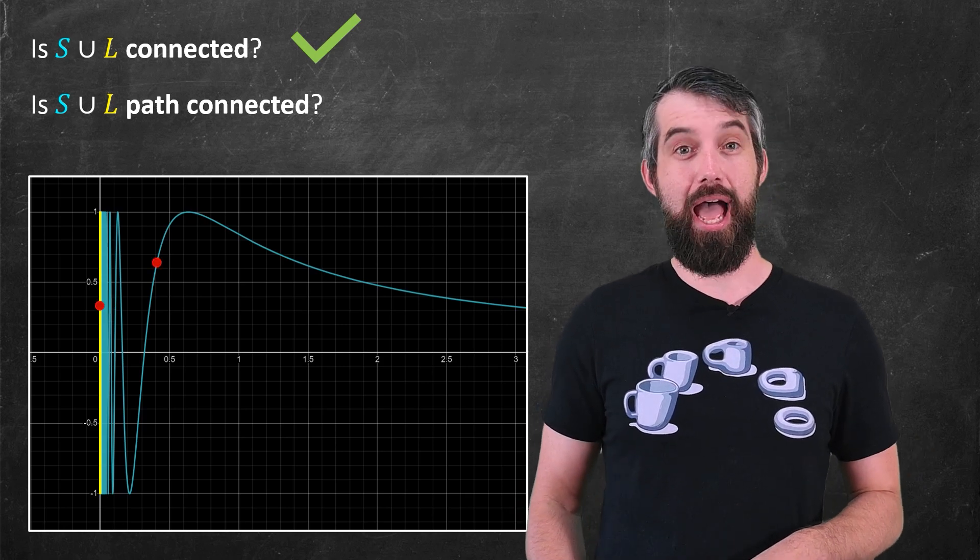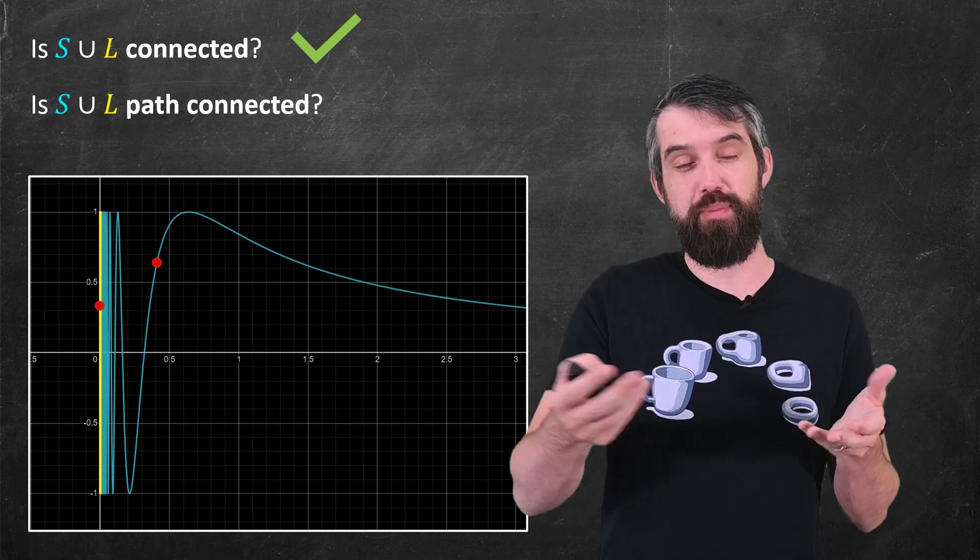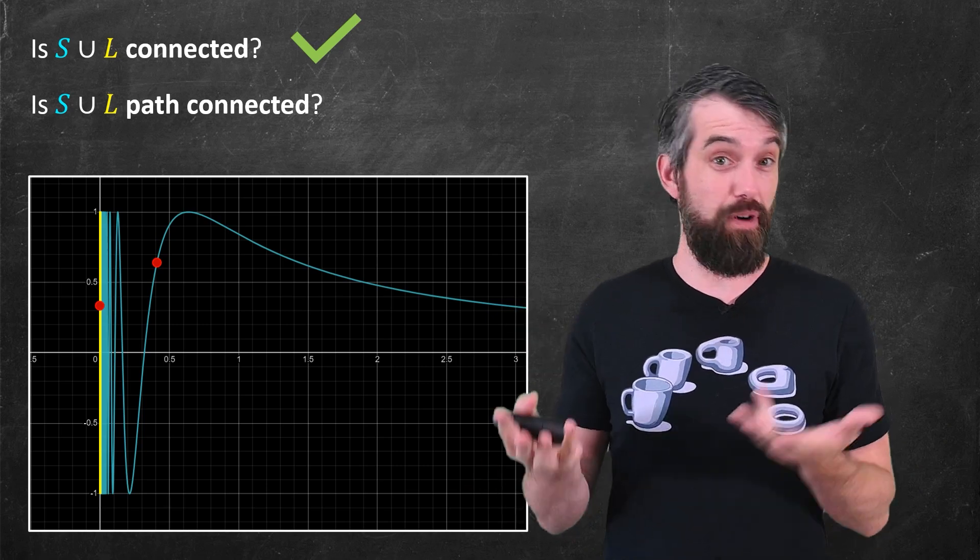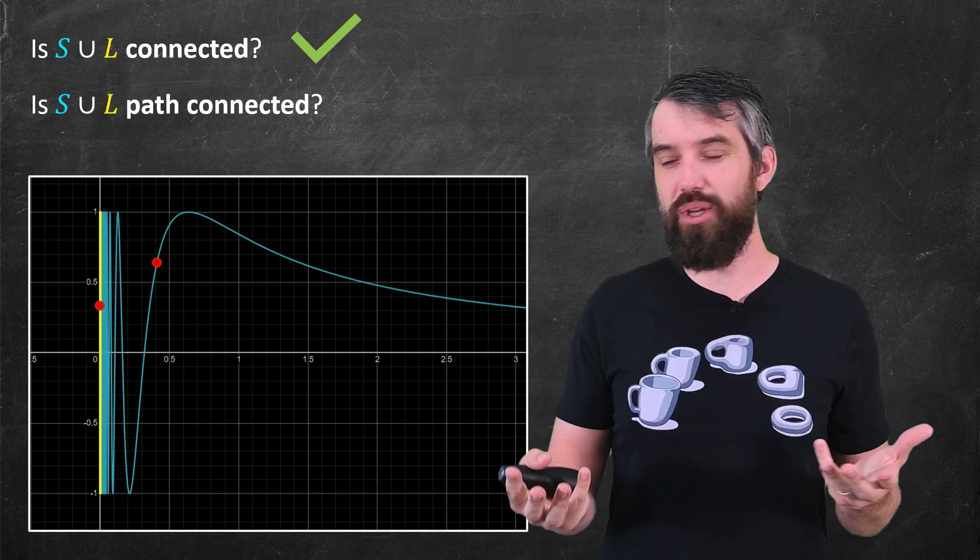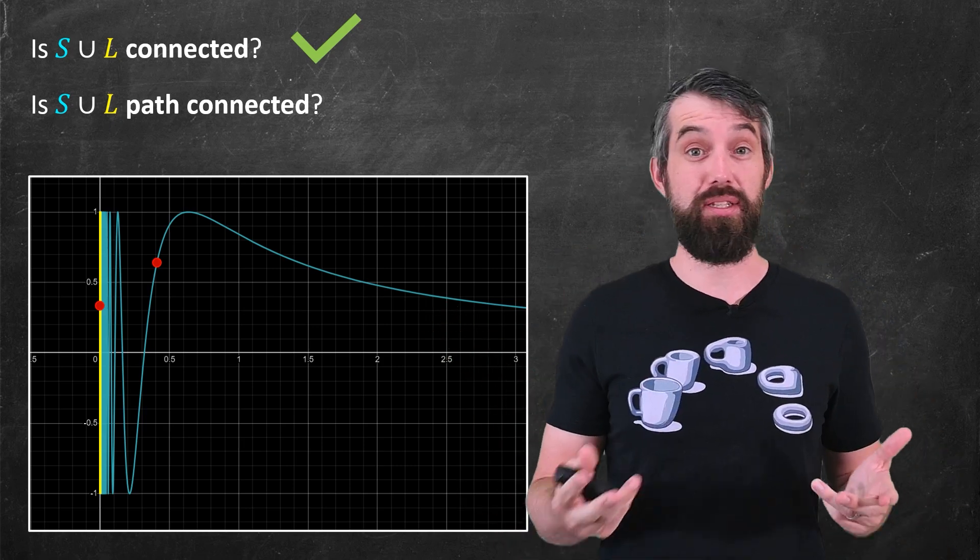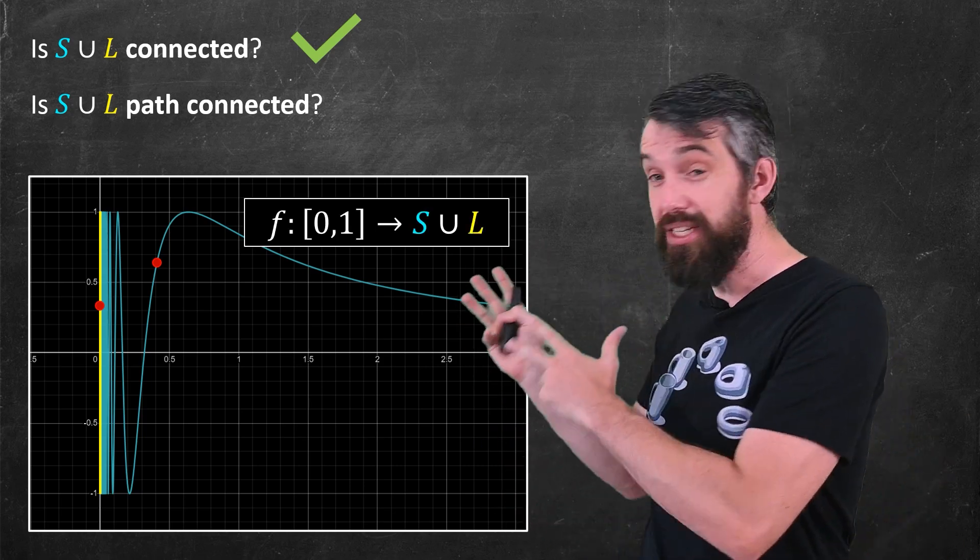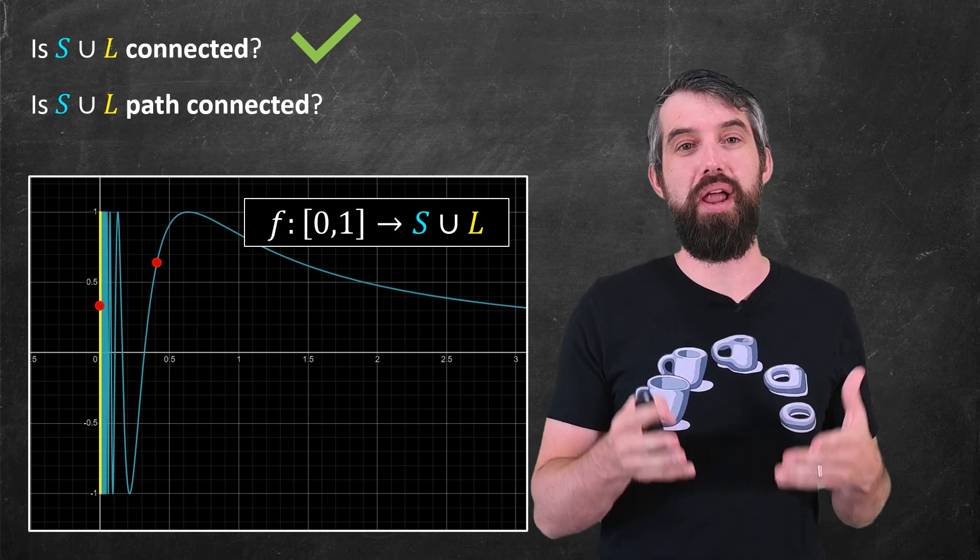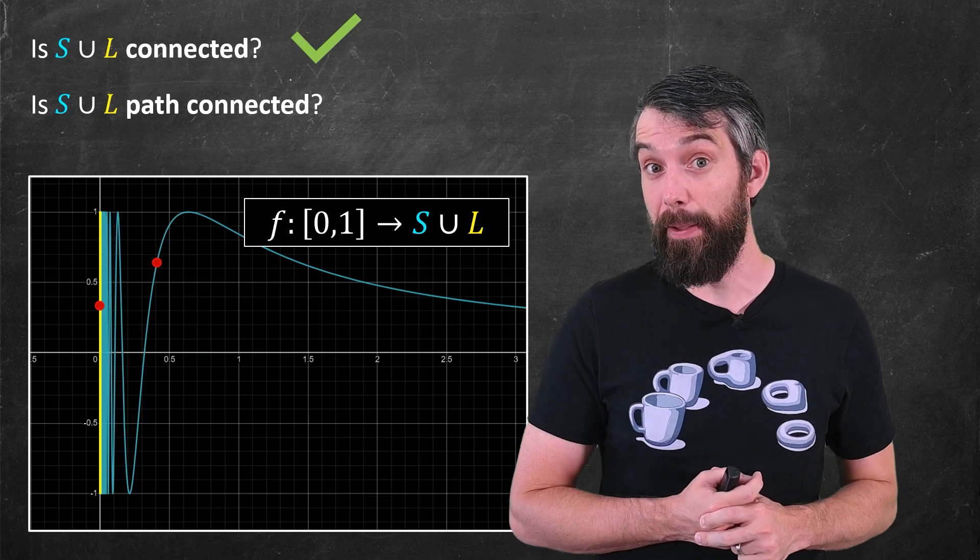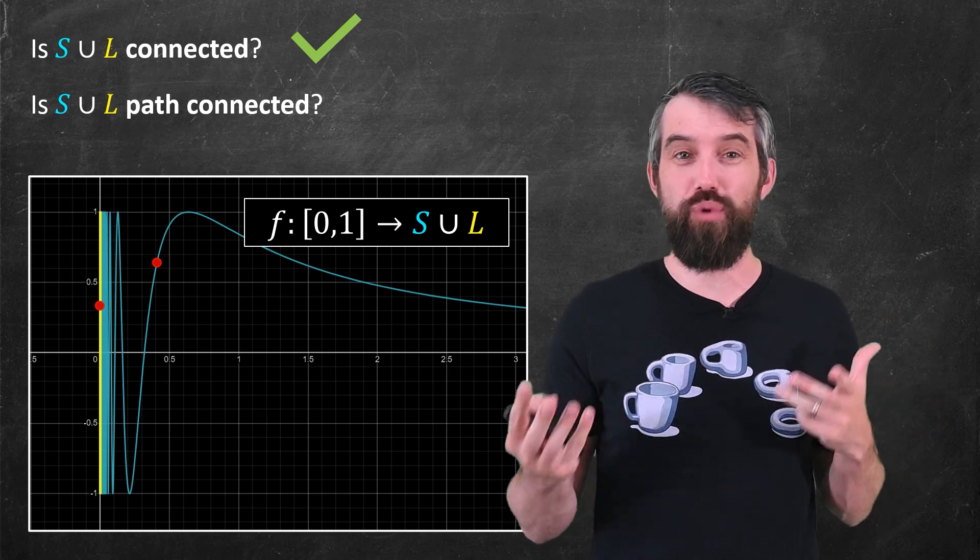For path connected, I am asking if I take two points that are along this set, can I make a continuous path that goes between them? The line itself and the sine curve itself are both path connected themselves, so I've put up two generic points where one's on the line and one's on the sine curve, and then our question is, can I make this continuous path that joins up between these? That is, I'm really looking for this continuous function f that goes from a closed interval into this space of consideration. I'm going to leave for you in the comments the rigorous proof of this, but I'm going to give you sort of a rough sketch here.